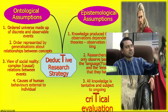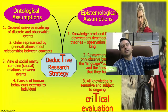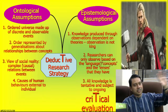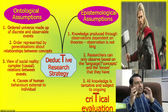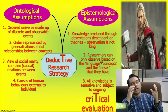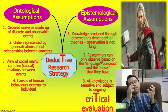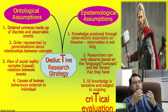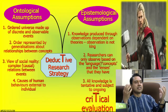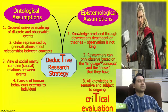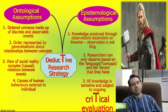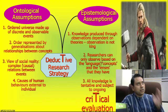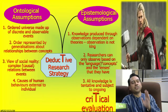Deductive research strategy: the ontological assumptions are very similar to the inductive research strategy. Ontological assumptions are about the world being orderly — that we can understand it through complex relations of concepts describing reality or phenomena. The ontological assumption about social reality remains the same. But the difference is in the epistemological assumption: knowledge produced through observations is dependent on theories. Observation is not king.